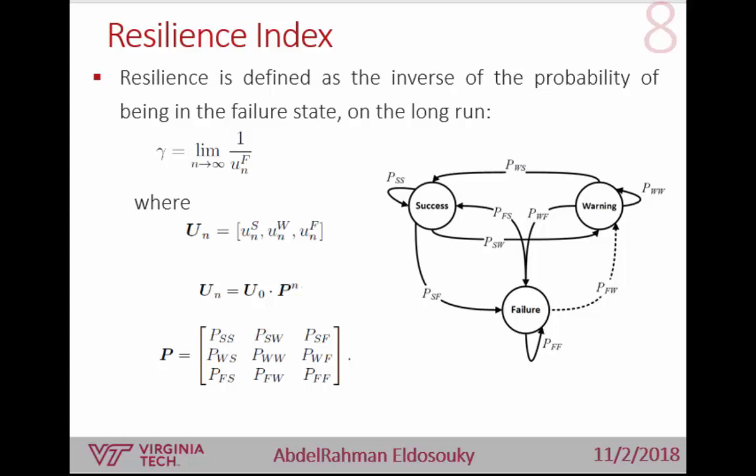To define a resilience index for our system, we start with the Markov chain having all these probabilities. We define our resilience as the inverse of the probability of being in a failure state in the long run — studying the system over many time steps as the number of steps tends to infinity. The inverse of the probability of being in the failure state defines our resilience.